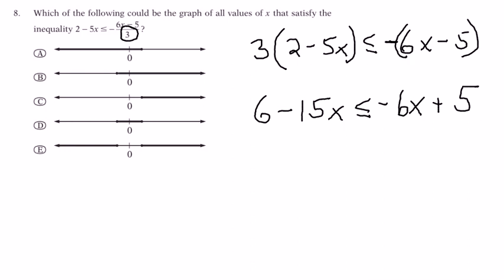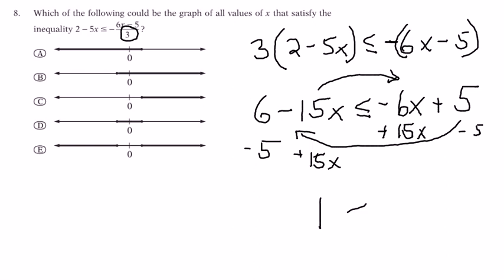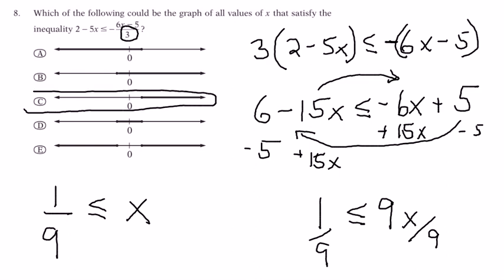Now, if I wanted to avoid dividing by a negative, which would flip the inequality, I'm going to move 15x over here and 5 over here. So, I add 15x to both sides and subtract 5 from both sides to get 1 is less than or equal to 9x. Now, when I divide by 9, I'm dividing by a positive number. So, the inequality does not reverse. In the end, I get x is greater than or equal to 1/9, which certainly fits with choice C.